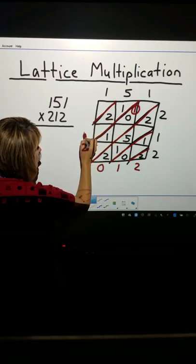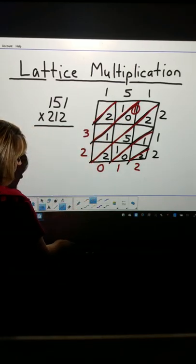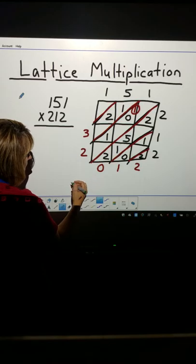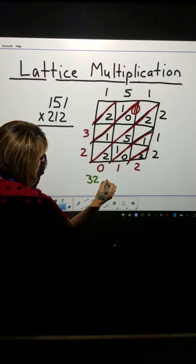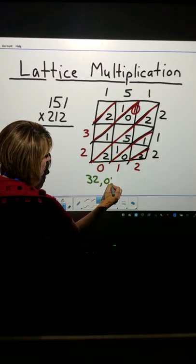This layer, 1 plus 2 is 3. The product, when I multiply, should be 32,012.